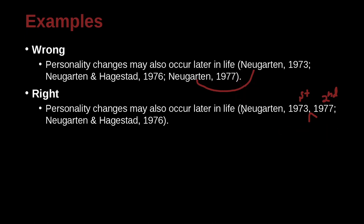The next issue is we have Neugarten and then Neugarten and Hasgard — so which one goes first? Remember the semicolon between different authors. Here we have Neugarten alone, and here we have Neugarten and Hasgard. Neugarten alone — with nothing more — will be earlier than using the H. H comes later because H goes after empty. The general rule is: if something is empty, that's the same as being before A or before zero.